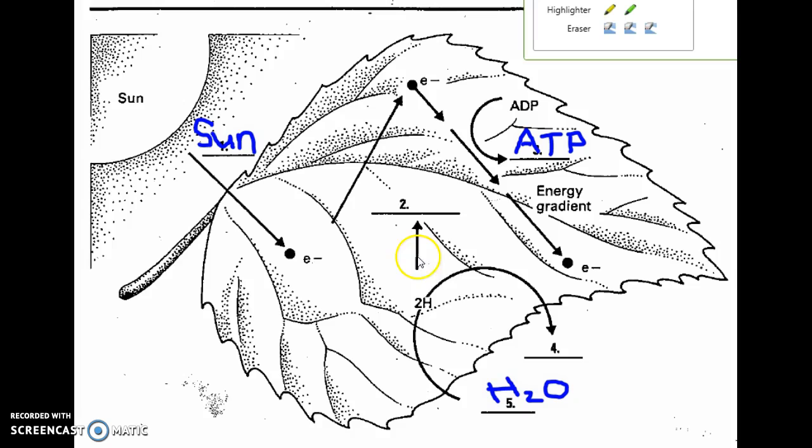The water gets split, and part of the water molecule - the oxygen part - is going to be converted to oxygen gas, which may be released by the plant through the leaf.